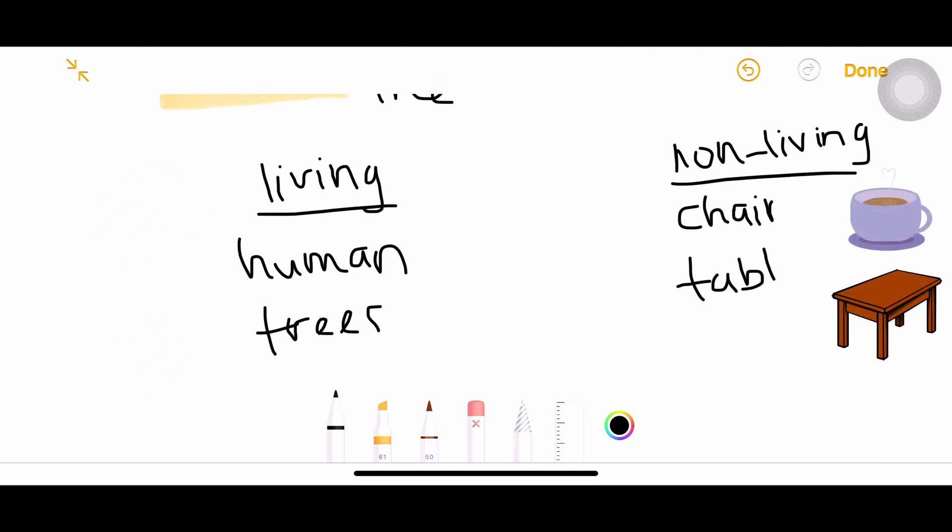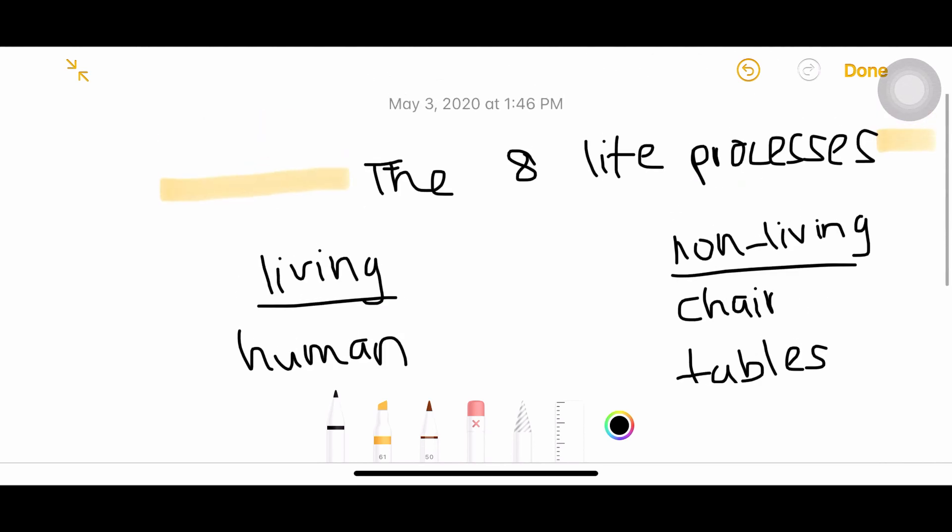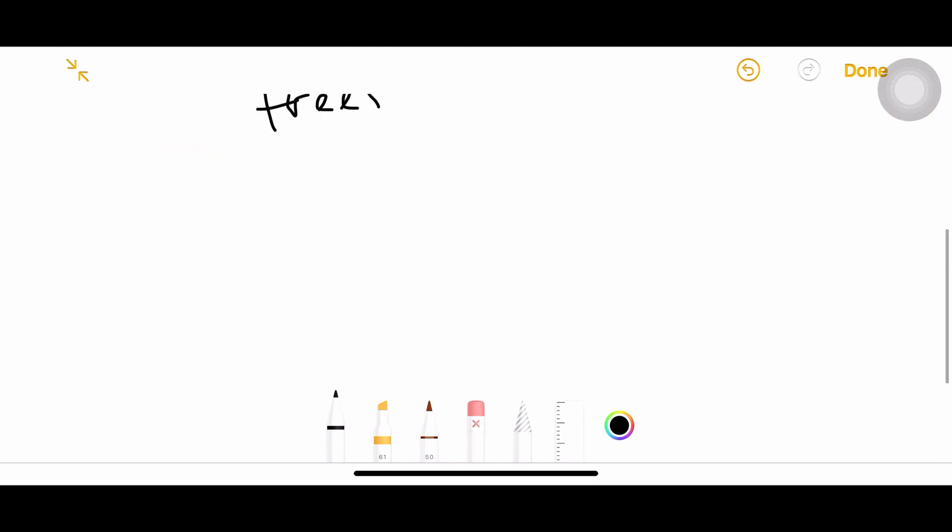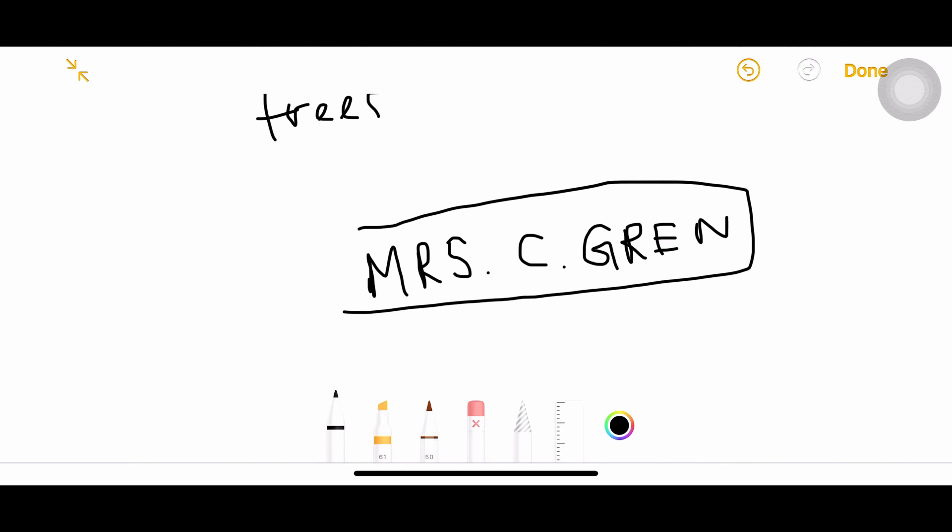In this syllabus, we will categorize living things differently. For an organism to be classified as living, they have to carry out these eight life processes. To make it easier to remember the eight life processes, there's a small acronym. It's actually a name: Mrs. C. Gren.